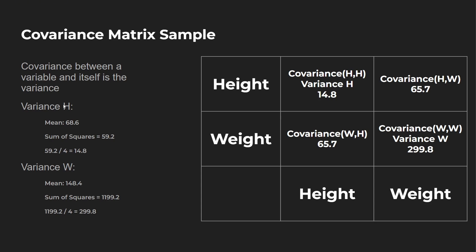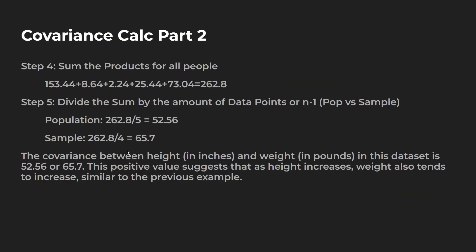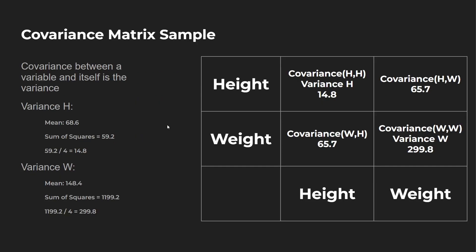I've covered variance in another video, but if you don't know how to calculate it, we'll do a quick walkthrough. Find your mean for each of these, then take the sum of the squares and then divide that by N minus one. Again, we're taking a look at sample, which is N minus one. You can take a look at population with just N. So now that you know the basics of how covariance works as well as the covariance matrix, I think it is time to code through a few different examples within Python.